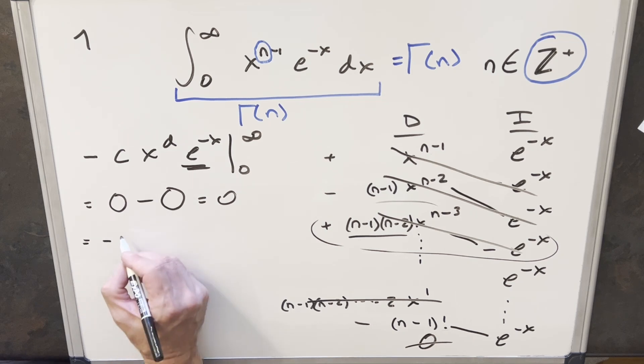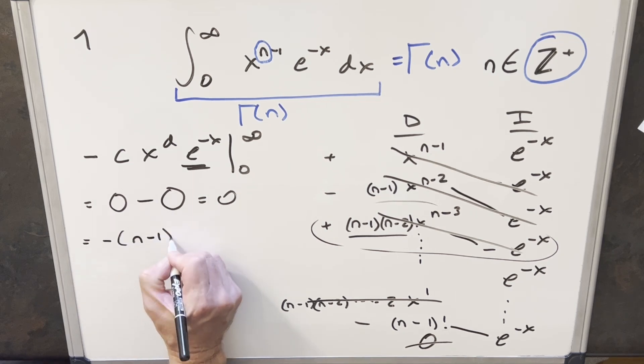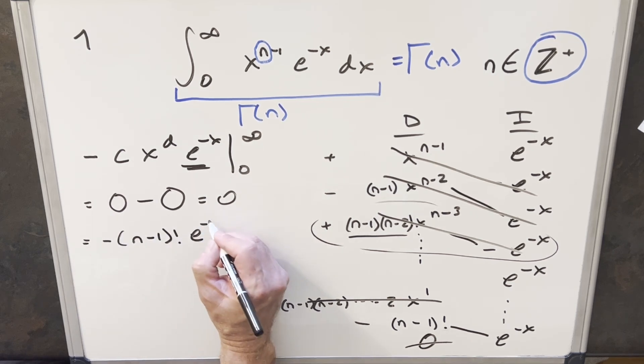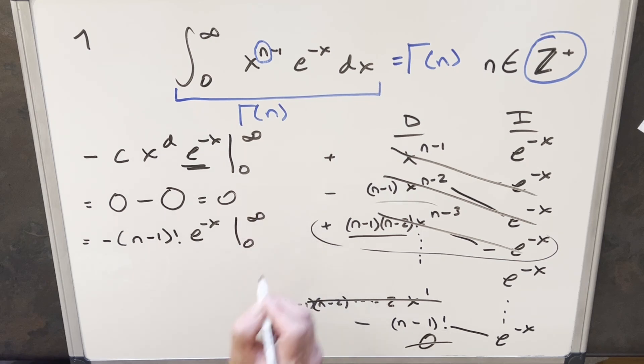So what we need to evaluate is going to be minus n minus 1 factorial times e to the minus x from 0 to infinity. And when we evaluate this, this piece here is just a constant value. You plug in infinity, this is going to 0, so this first part is going to 0.